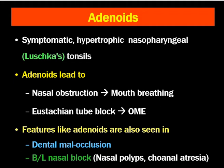Simple adenoid means normal adenoid tissue present in the nasopharynx of children. In adults, we can simply see remnants or very small adenoids that do not interfere with normal breathing function. Symptomatic adenoids lead to nasal obstruction, which in turn leads to mouth breathing and its associated complications, as well as Eustachian tube block leading to otitis media with effusion. Occasionally, features of adenoid facies are also seen in dental malocclusion and bilateral nasal block due to nasal polyps or connective tissue issues.